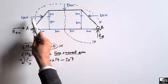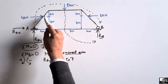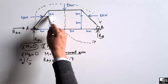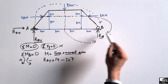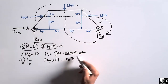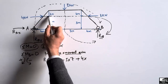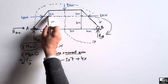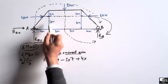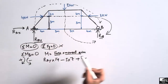The 4 kN horizontal load also creates a moment about point B. It creates a clockwise moment about point B, so it is taken as positive. The moment arm is the vertical distance from the point of application of the 4 kN load to point B, which is 3 meters. So the contribution is plus 4 multiplied by 3.